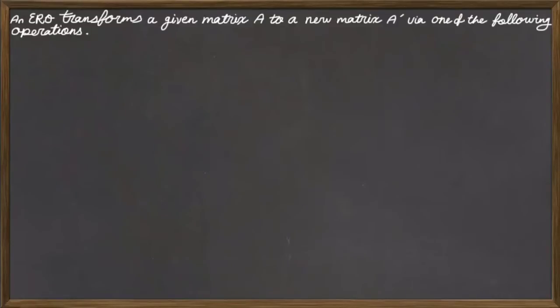via one of the operations that we are going to introduce in this lesson. The first type of elementary row operations are type 1, where we simply multiply a row of a given matrix by a non-zero scalar.